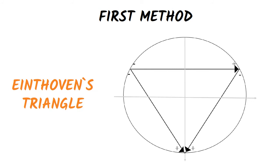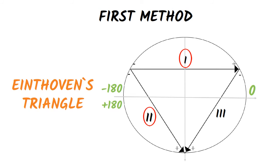You can find more about Eindhoven's triangle in the video about ECG leads on this channel. The edges of the triangle are the three bipolar limb leads: D1, D2, and D3. The superior half of the circle contains negative values ranging from minus 180 degrees to zero degrees, and the inferior half contains positive values ranging from zero degrees to plus 180 degrees. We will use leads D1 and D2 and measure the amplitude of the QRS complex in these leads.